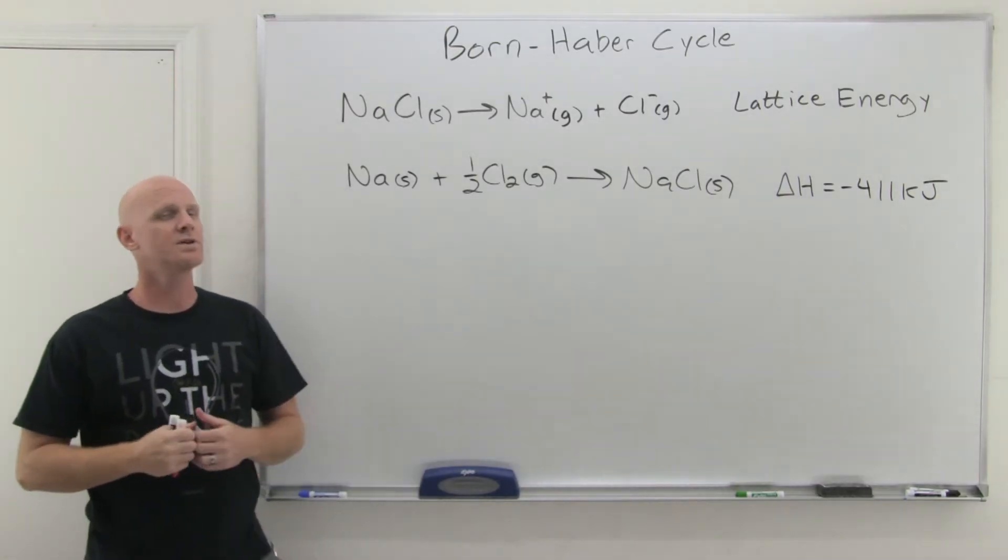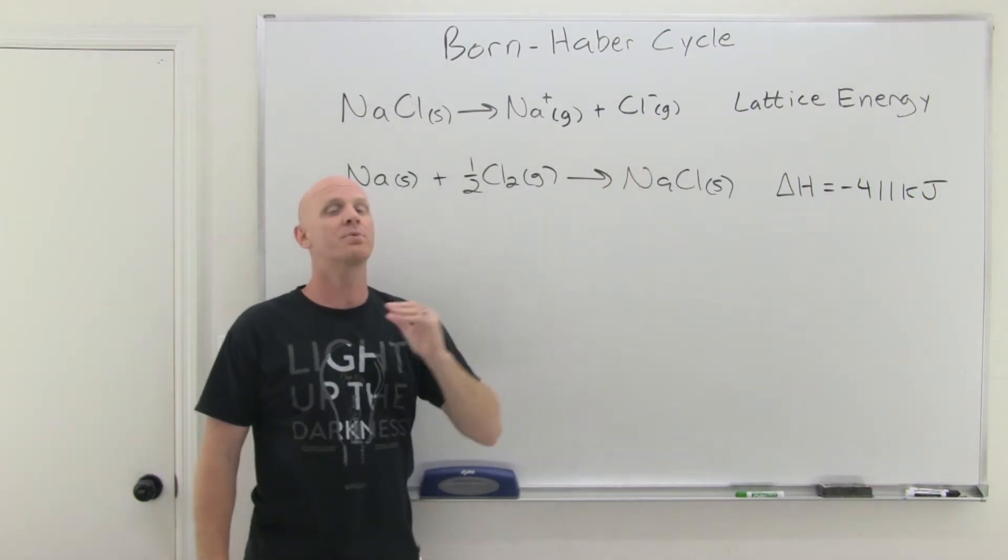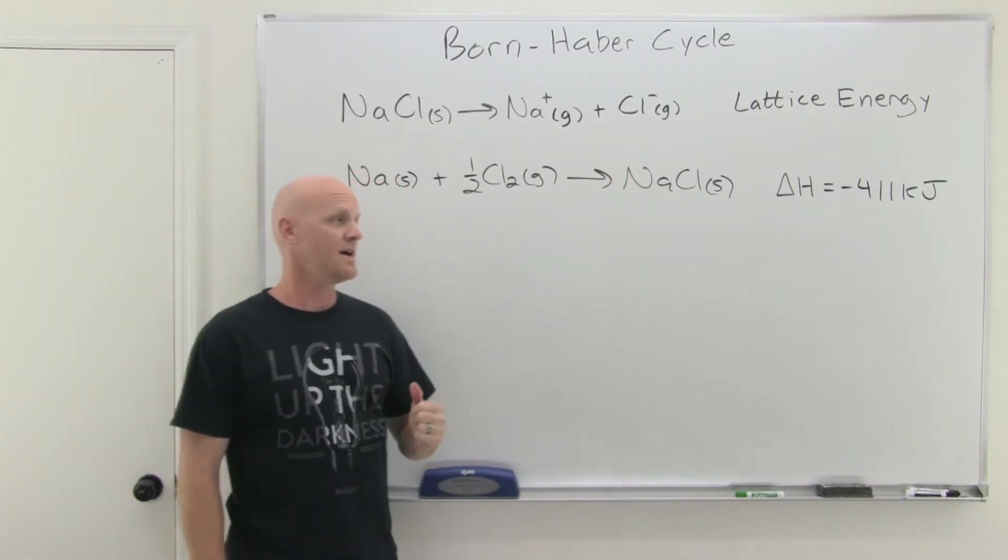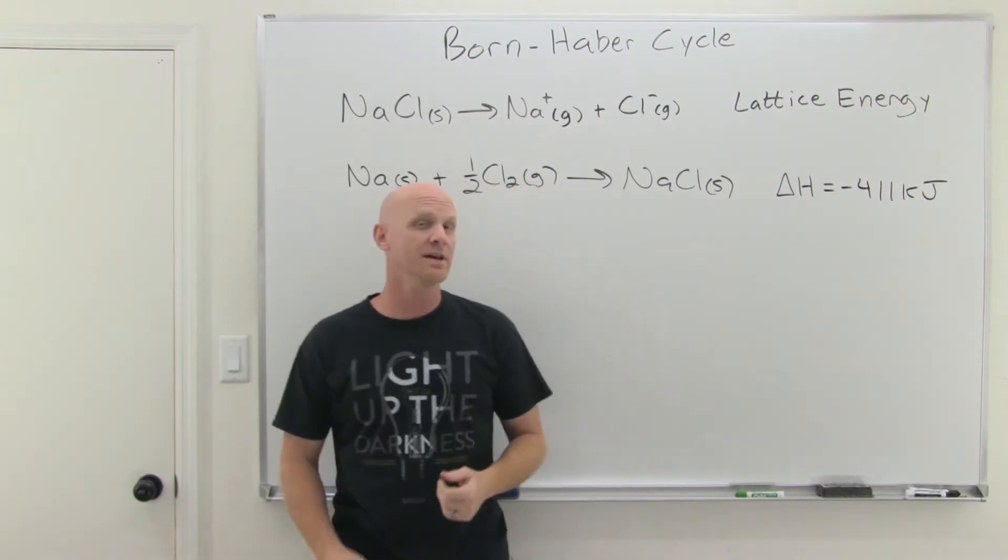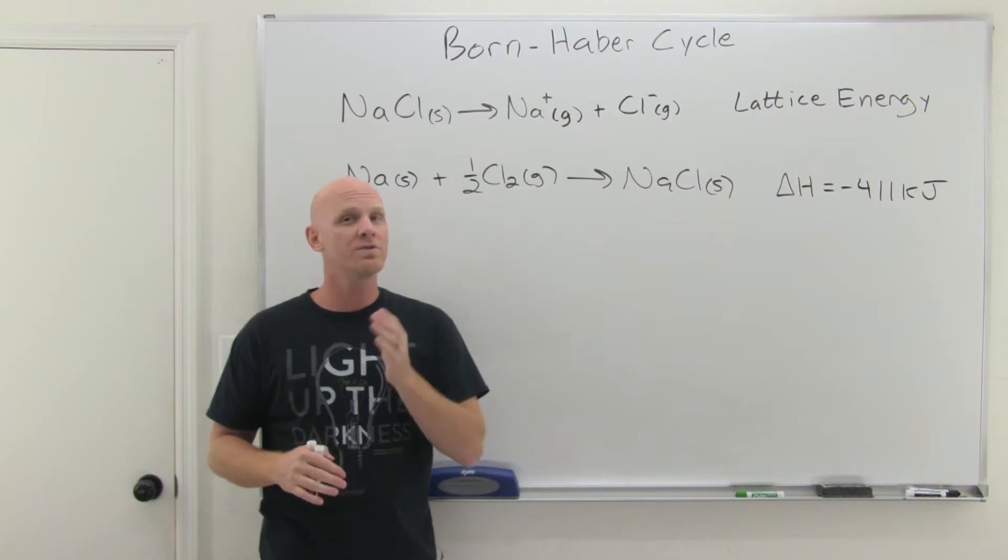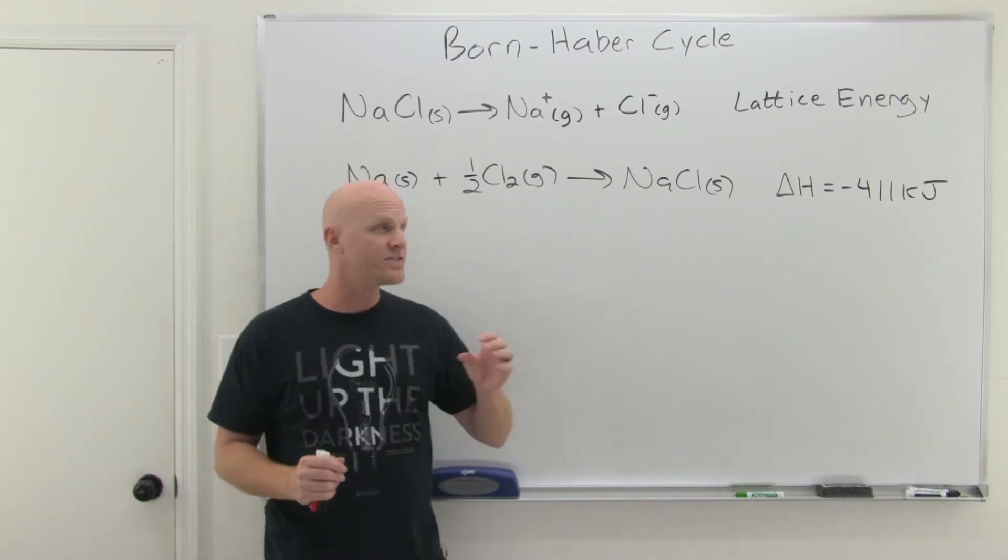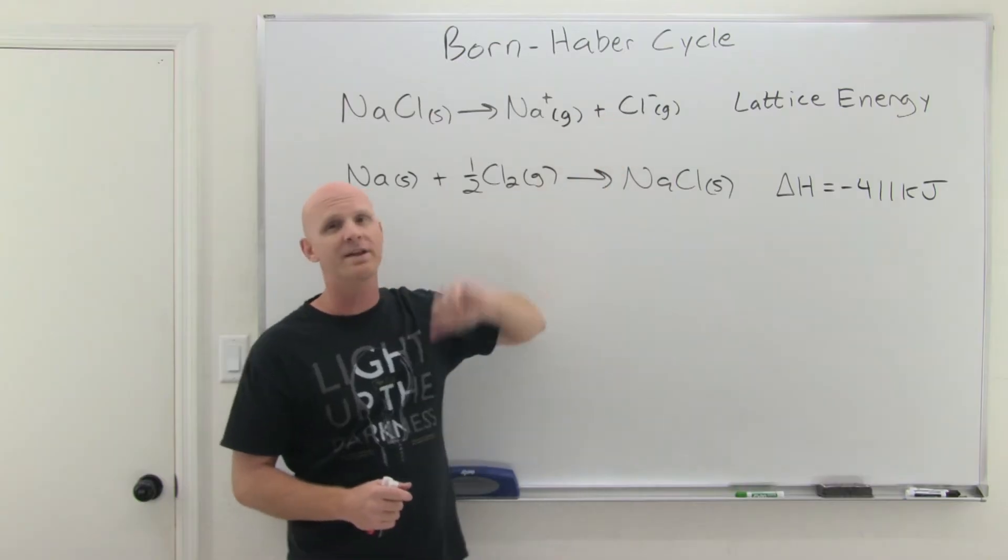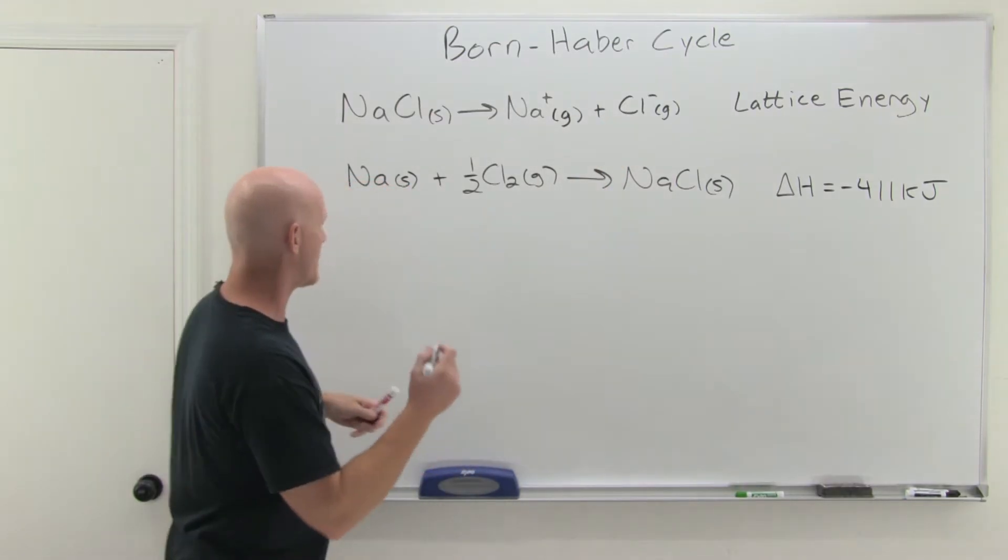And so what we're going to do is we're going to use Hess's law here. We're actually going to do this exact reaction, but break it up into a series of steps, where the total delta H for the entire process is going to be this negative 411 kilojoules, according to Hess's law. And what's cool is that we're going to know the delta H's from tabulated values and stuff for every single step, except for the one that's going to be related to the lattice energy, and that's what's going to allow us to calculate it.